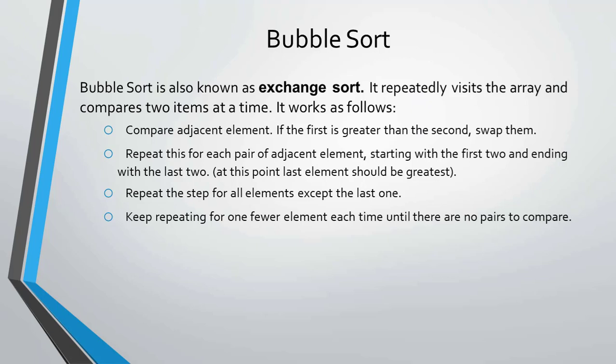The second technique of sorting is bubble sort, also known as exchange sort. It repeatedly visits the array and compares two items at a time. It works as follows: compare adjacent elements — if the first element is greater than the second, swap them. Repeat for each pair of adjacent elements, starting with the first two and ending with the last two. At that point, the last element should be the greatest. Repeat for all elements except the last one, and keep repeating until there are no pairs left to compare.